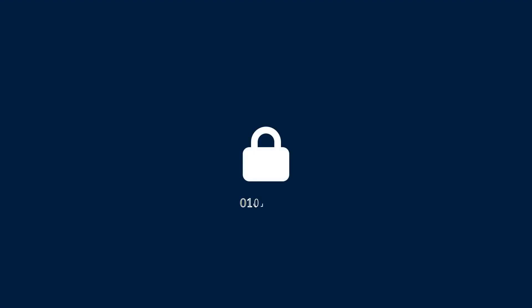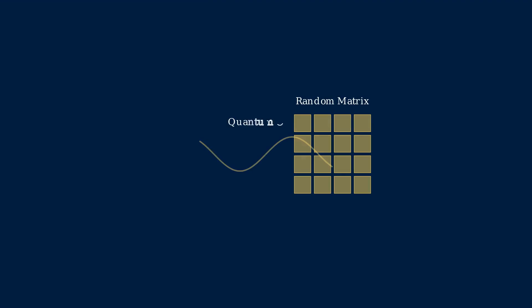Primes are the foundation of encryption. If we truly understand their distribution, we could either strengthen or break cryptographic systems. But the implications go beyond security. It connects to random matrix theory and quantum chaos. It shapes how we estimate prime gaps. And it influences algorithms used in everything from data compression to secure messaging.